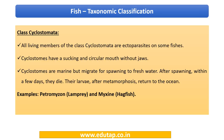Let us quickly look at class Cyclostomata. We have already seen the important point that it belongs to a division of organisms that lack jaws, and most living members of this class are ectoparasites on some fishes. Examples are lamprey and hagfish.